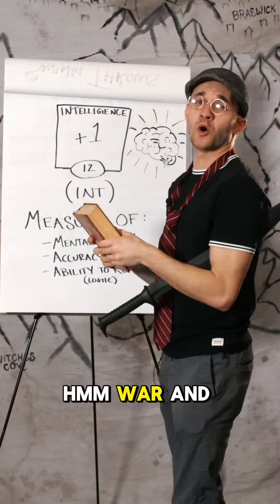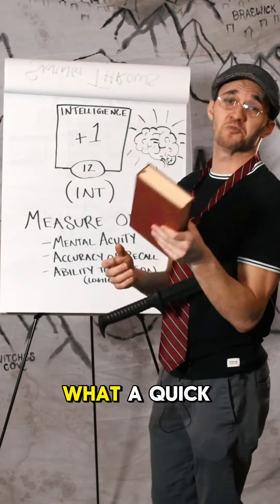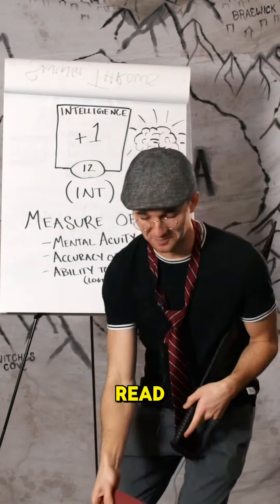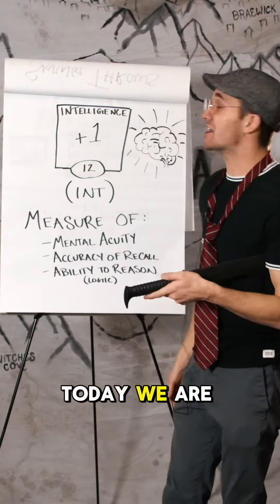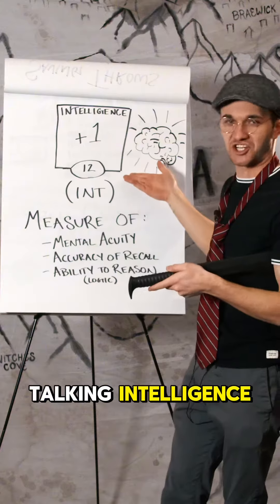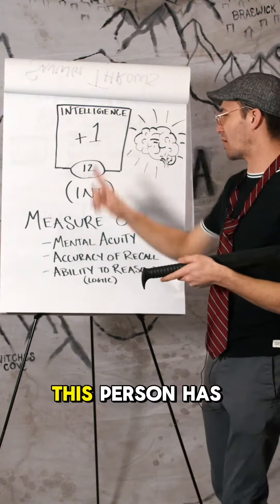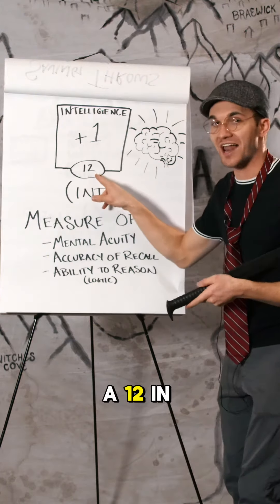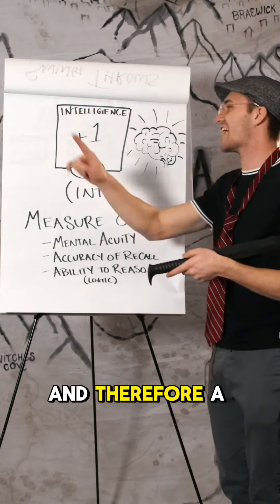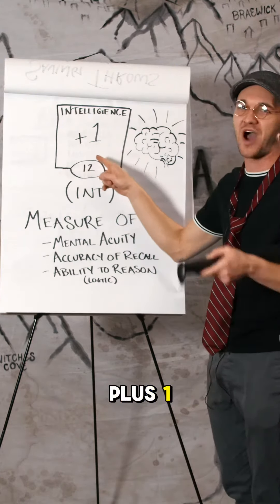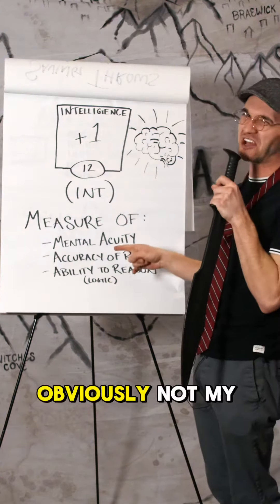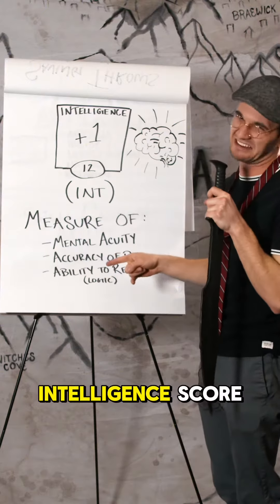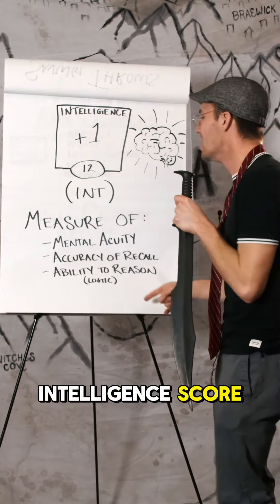Hm. War and Peace. What a quick read. Today we are talking intelligence. This person has a 12 in intelligence and therefore a plus one. Obviously not my intelligence score.